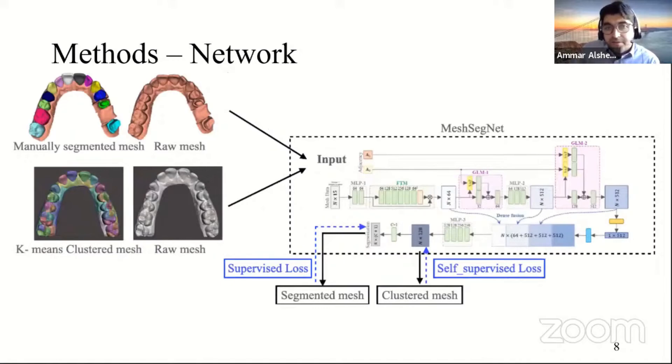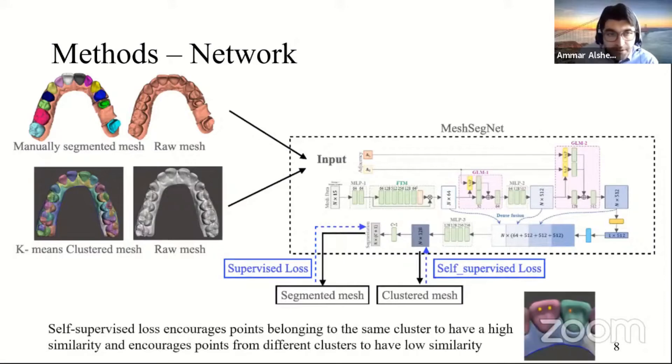And then we can modify our network to extract the features before computing a softmax and then computing our self-supervised loss on these features of the clustered data. And this self-supervised loss is computed in a way that encourages points belonging to the same cluster, the yellow points in the picture, to have high similarity. And points belonging to different clusters, such as the yellow point and the orange point, because they belong to different clusters, the loss will encourage them to have lower similarity. And that's how we learn on self-supervised training.